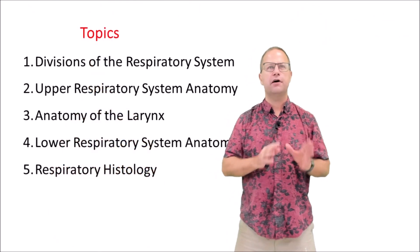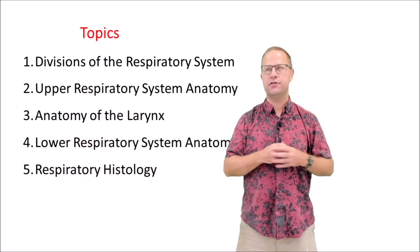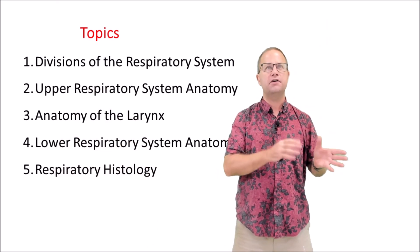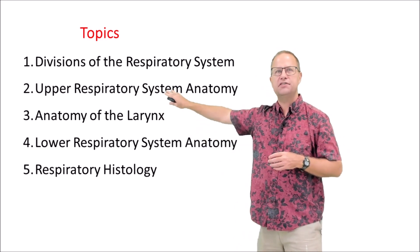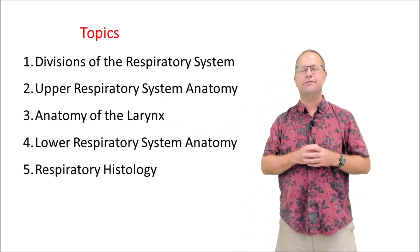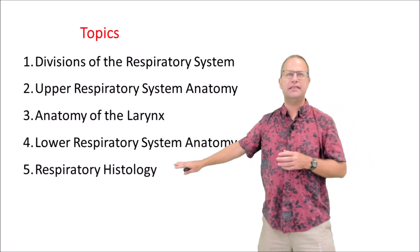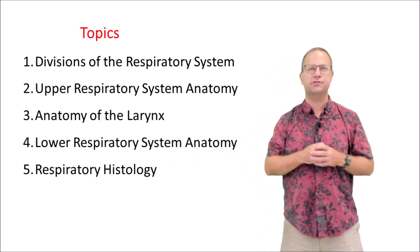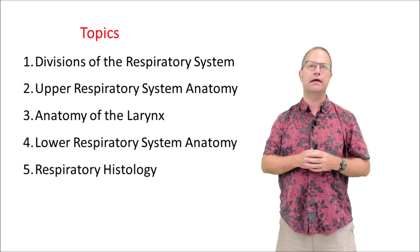Here's a list of topics. We're going to talk about the divisions of the respiratory system. We're then going to focus on the anatomy of the upper respiratory system, larynx, and lower respiratory system. Finally, we're going to conclude by looking at the histology of some respiratory structures such as the trachea and also the alveoli.